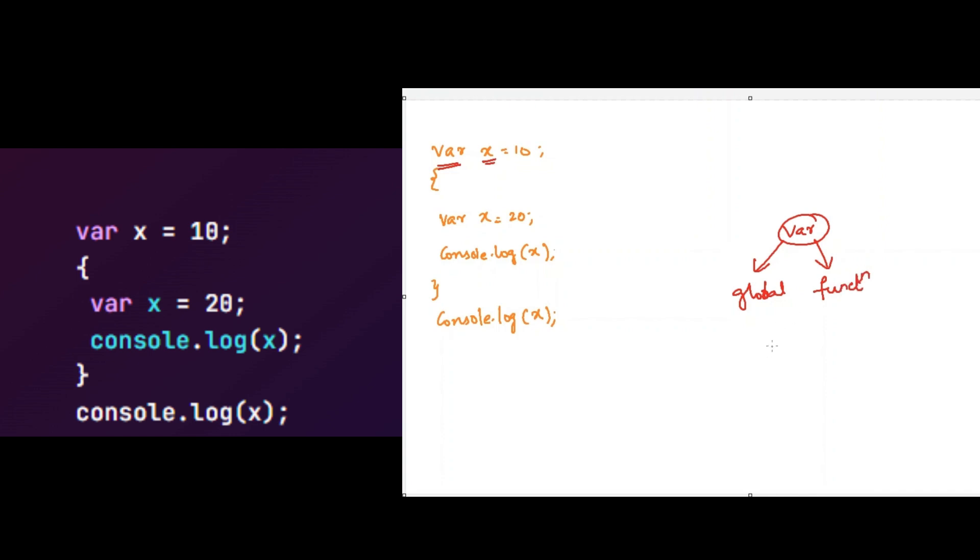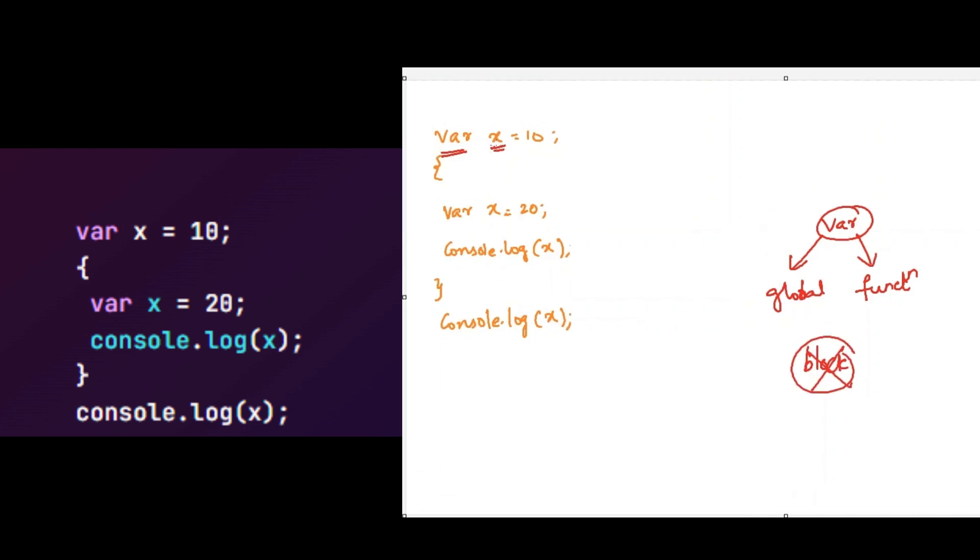But variables declared with var will not become block scoped. If you see here, we are declaring the variable by the var keyword, so it will become global scoped and assign the value of 10. In the third line, we are declaring the variable x inside the block. But even though we are declaring the variable x inside the block, it will not become block scoped. It will always be either global scoped or function scoped.